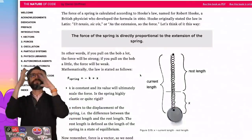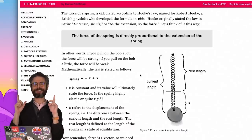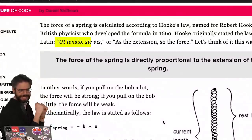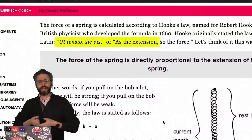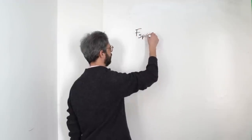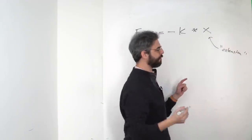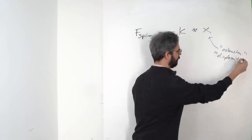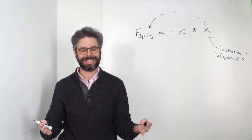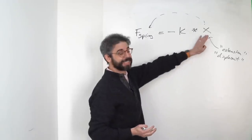I'm going to begin this journey through exploring springs with Hooke's Law. Hooke's Law is named for Robert Hooke, a British physicist who developed this law in the 1660s. It was originally stated in Latin as 'ut tensio sic vis' — as the extension, so the force. It's more commonly written as an equation. x stands in for the extension — another word for that might be displacement. k is a value commonly referred to as the spring constant: how stiff, how springy the spring is.